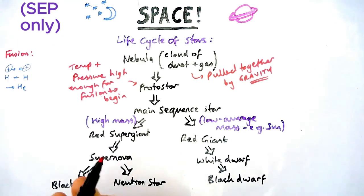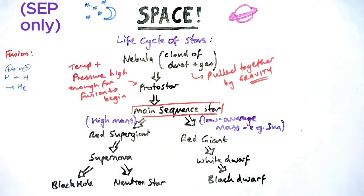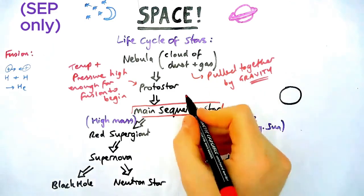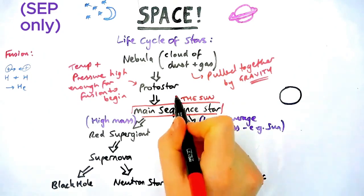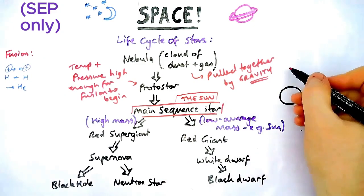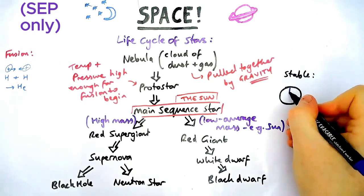Next stage, main sequence star. This comes up a lot of times in exams. This is the stage our Sun is in currently. It's been there for about 5 billion years and it will continue to be there for about another 5 billion years or so. So let's look at what it's like. Now it's a very stable phase. Stable meaning the forces acting on it are balanced or in equilibrium.